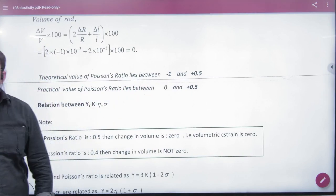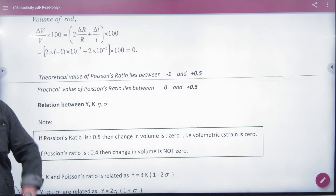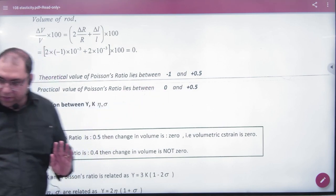Practically, when we do ideal conditions in the book, but practically when it is in the lab, it is between 0 and 0.5.